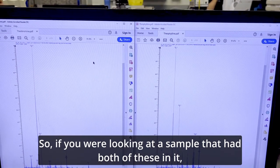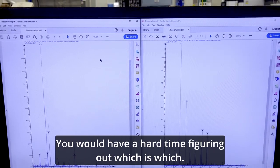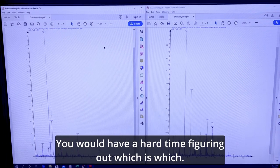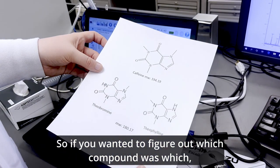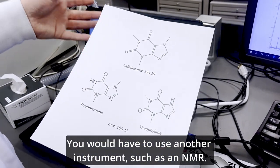And this one is theobromine, and this is theophylline. So if you were looking at a sample that had both of these in it, you would have a hard time figuring out which is which. So if you wanted to figure out which compound was which, you would have to use another instrument such as an NMR.